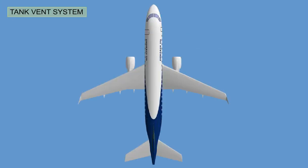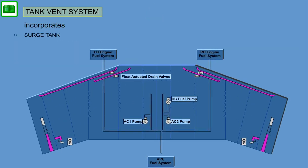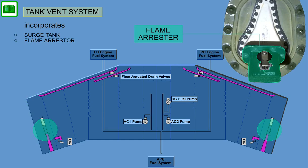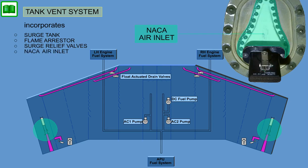The tank vent system is designed to keep the pressure differential between the tank and ambient within structural limits under all operating conditions, and to prevent fuel spillage. The vent system incorporates the surge tank, which is connected to ambient via the flame arrester and surge relief valves and a NACA air inlet.